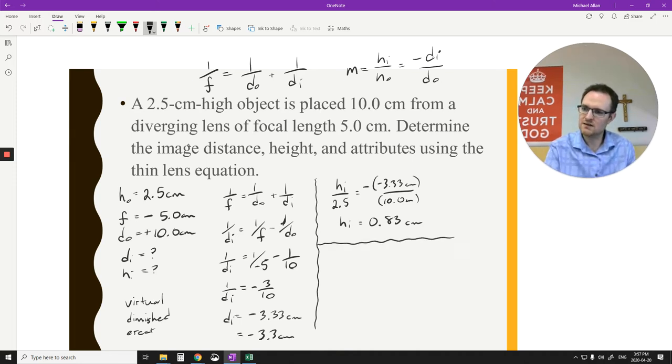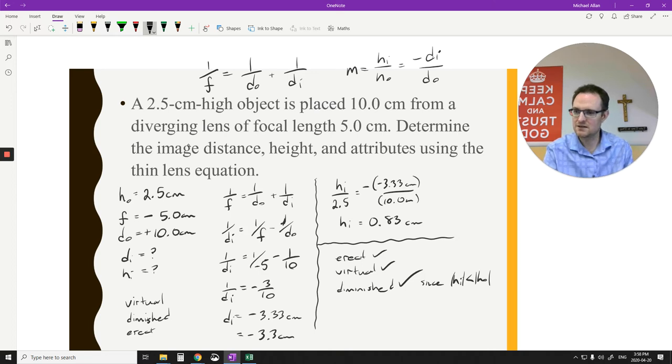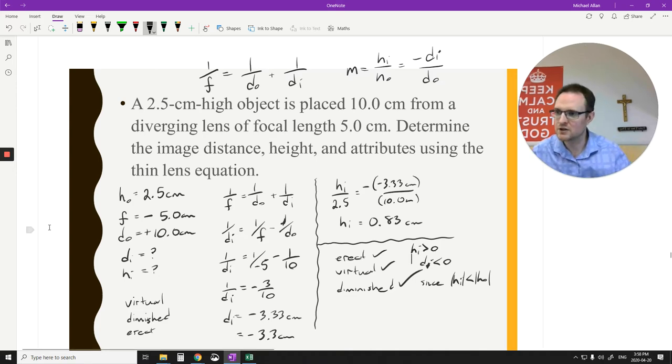So my attributes for this, because it's a positive height, is erect. So we were correct on that before. We had a negative di. A negative di meant it was virtual. So I was right about that before. And the hi is smaller than the ho. You can see it was 2.5 to start off with, then that's 0.8. So this is also diminished. Since hi is less than ho, and the di is less than 0, that makes it virtual. And the hi is a positive number, that makes it an erect image.